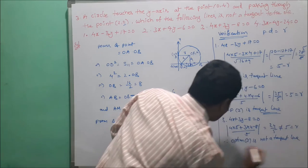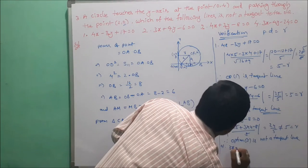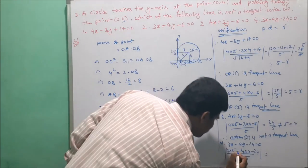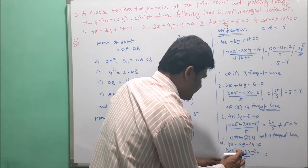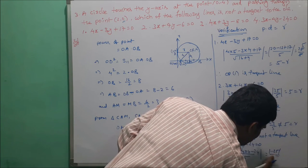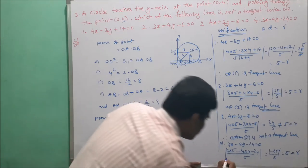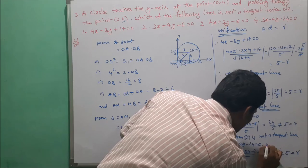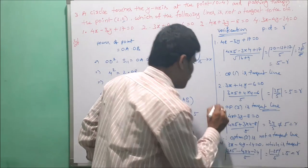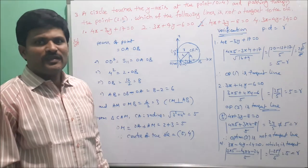Checking the fourth option: 3x - 4y - 24 = 0. Perpendicular distance from (5, 4): |3×5 - 4×4 - 24| / 5 = |15 - 16 - 24| / 5 = |-25| / 5 = 25/5 = 5, which equals R. So option 4 is also a tangent line. Therefore, from the four options, the third option is not a tangent line — that is our solution.